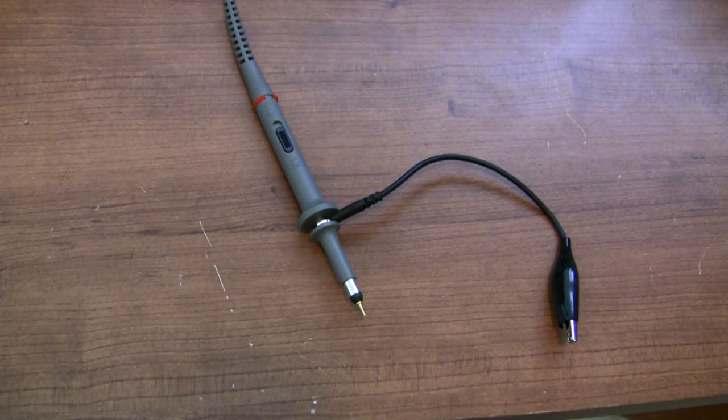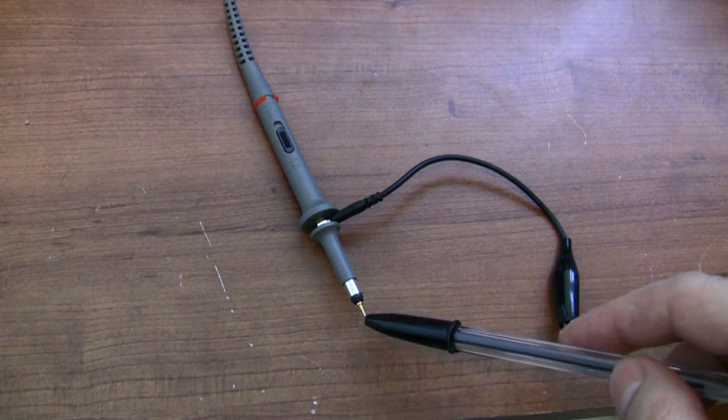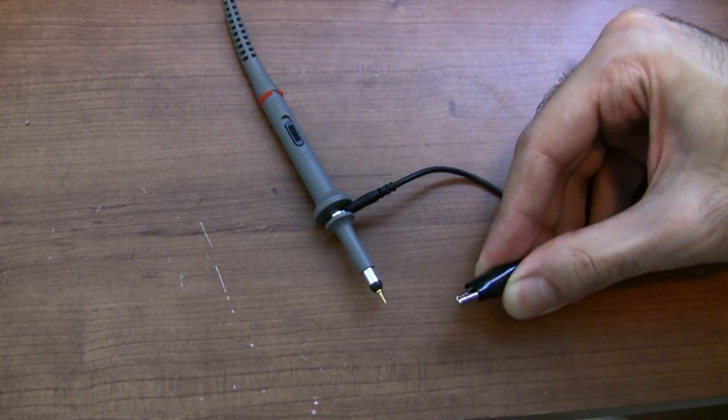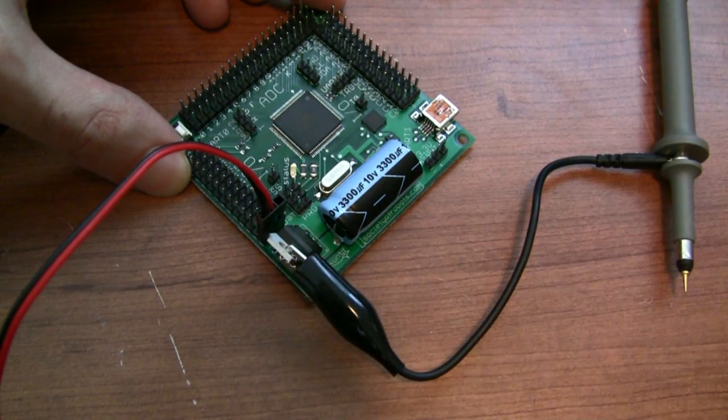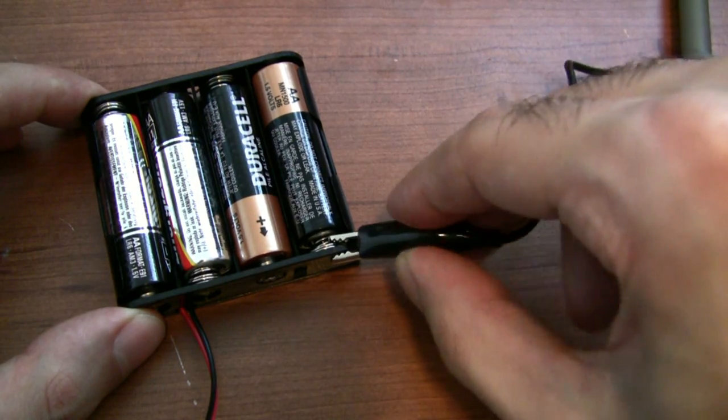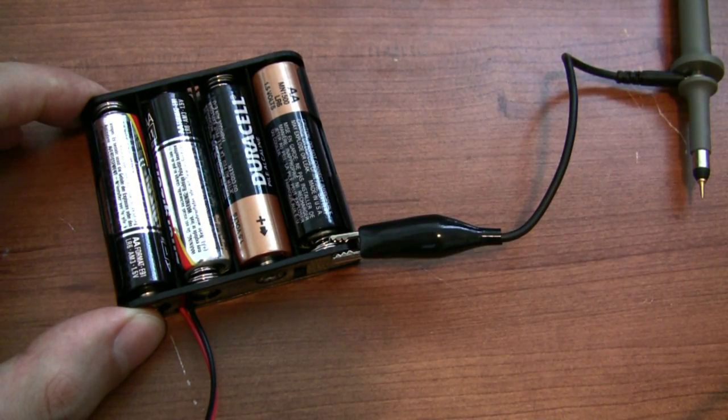The probe will have two main parts: the ground clip and the tip. The ground clip is just a little alligator clip that you're supposed to attach to the circuit ground or circuit common. If you don't know what that means, just connect the ground clip to the negative terminal of your battery.